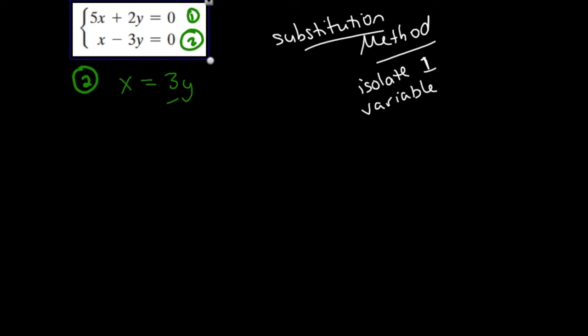So now I have x is equal to 3y. Equation 2 just changed into this, adding 3y to both sides. This is 0 plus 3y. So this is a nice easy case.